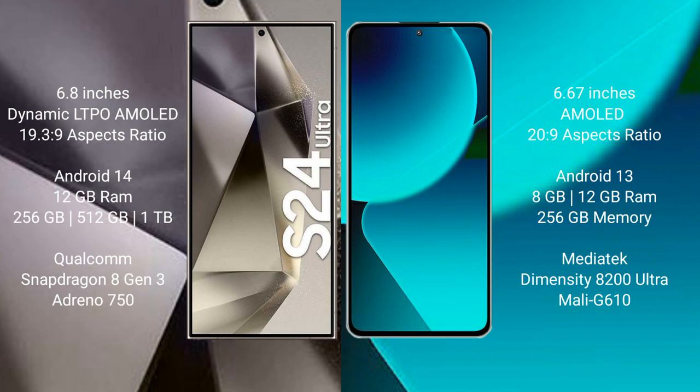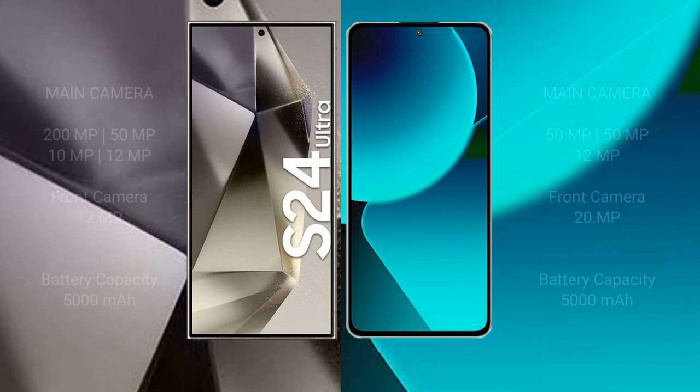Samsung Galaxy S24 Ultra comes with 12GB RAM and 256GB, 512GB, or 1TB internal storage, with a Qualcomm Snapdragon 8 Gen 3 processor and GPU Adreno 750. Xiaomi 13T comes with 8GB or 12GB RAM and 256GB internal storage, with a MediaTek Dimensity 8200 Ultra processor and GPU Mali-G610.